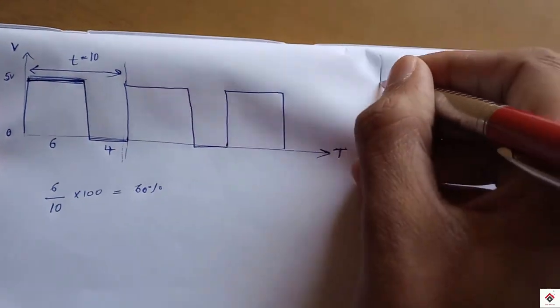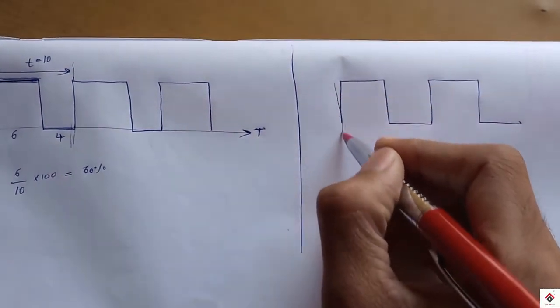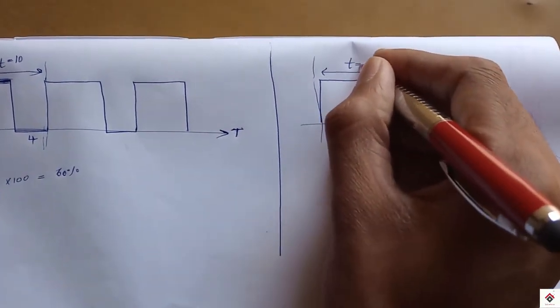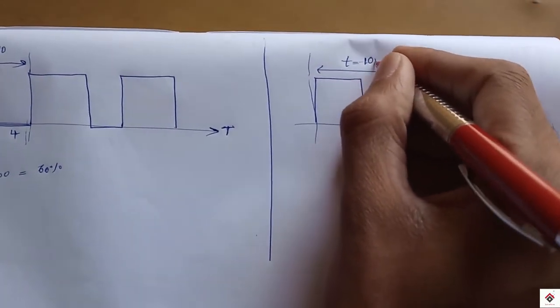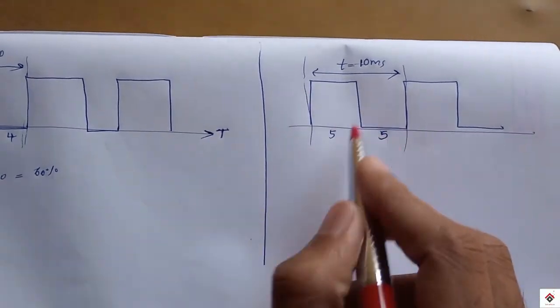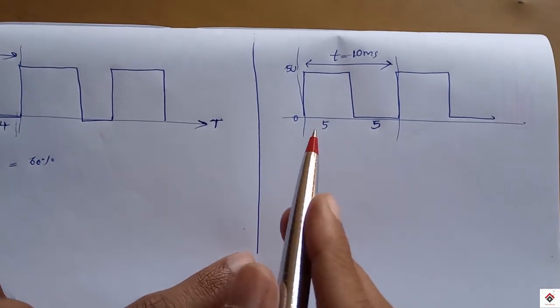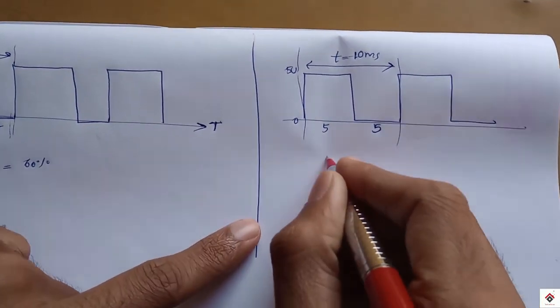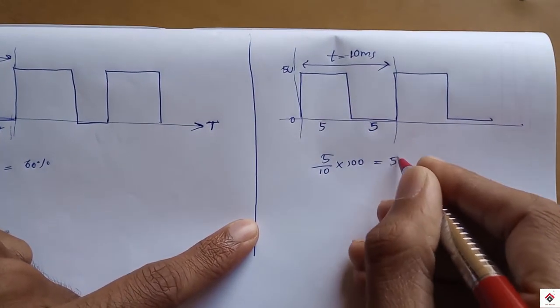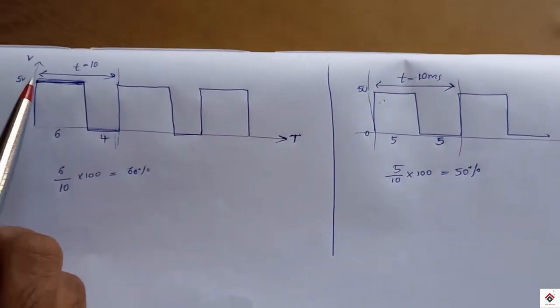Similarly we will consider another wave. So just consider here the time period is 10 millisecond and this is for 5 millisecond and this is for 5 millisecond. So it is half at 5 volt and half at 0. So here if you calculate the duty cycle it gives 50 percentage. So this is 50 percent duty cycle and this is 60 percent duty cycle.